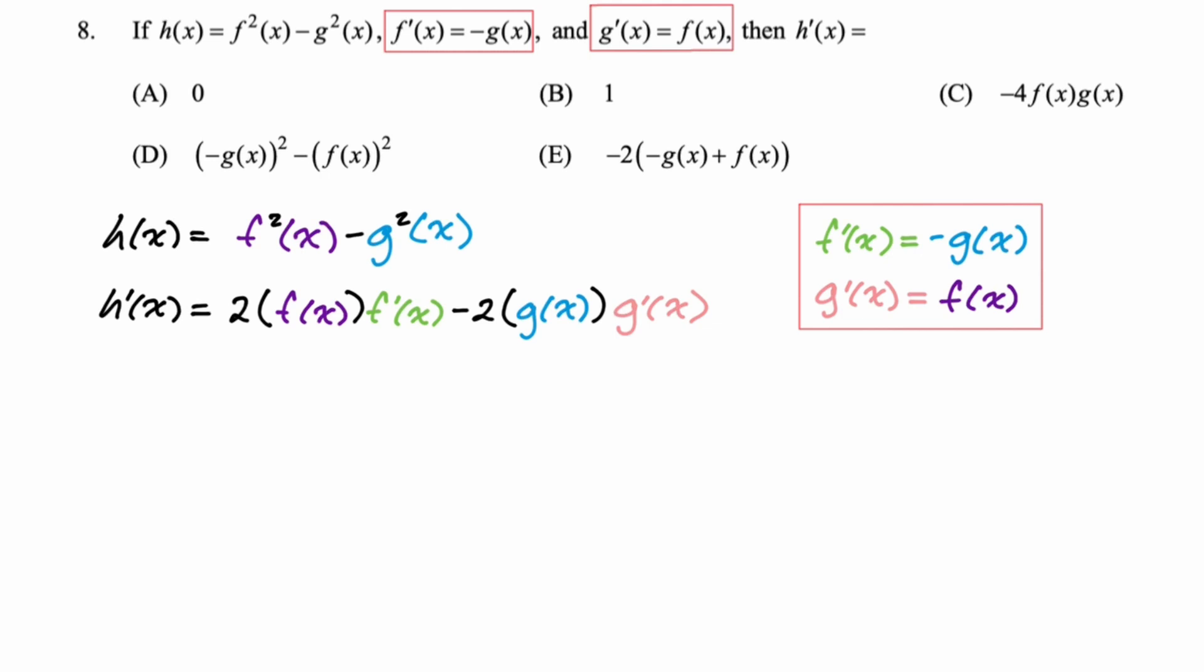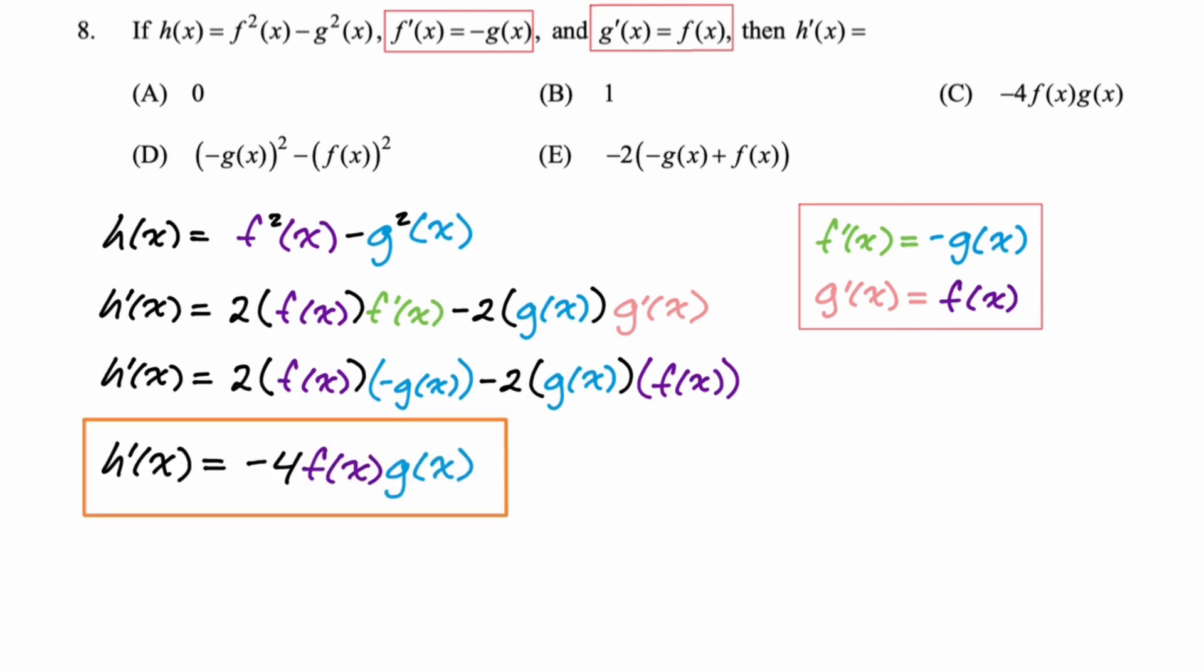So I can see that f' is going to become -g(x). So we're gonna make that swap and then g' will just become f(x). So let's make those changes. So we have our 2f(x), our f' will become that -g(x), which we can clearly see because of the colors. And then -2g(x), g' will become f(x). So we have this. And then we just want to clean it up. So you have 2(-2fg - 2gf), which is just going to give us -4fg. Look at the answer choices, you can see that that is option C.